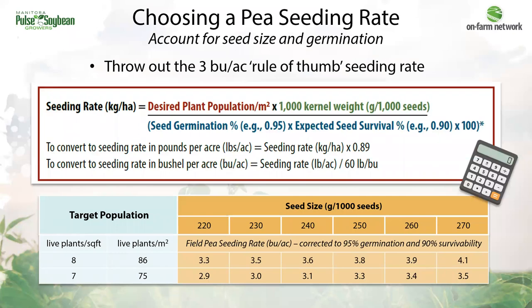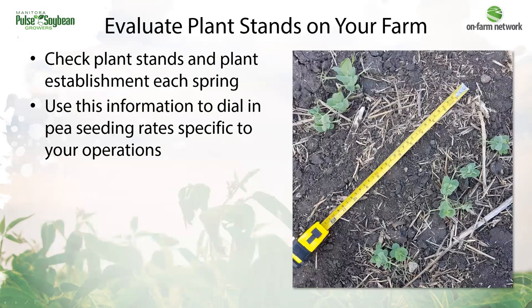When choosing a seeding rate for peas on your farm, take note of the variety seed size and calculate your seeding rate based on your germination rate and your expected seed survival — that expected seed survival is going to be based on your farm's experience. Here's a quick cheat sheet for different seed sizes when germination is 95% and expected survivability is 90%, though in these trials we're finding that number is actually a bit lower. The top row shows the bushels per acre seeding rate needed to establish eight plants per square foot, and the bottom is seven plants per square foot. To inform that expected seed survival, count plant stands in your fields, relate that back to your seeding rate, and ask whether it's lower than expected and what might have reduced plant establishment.